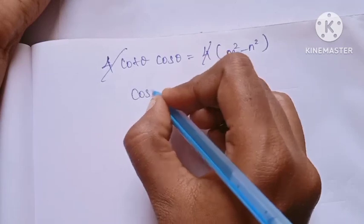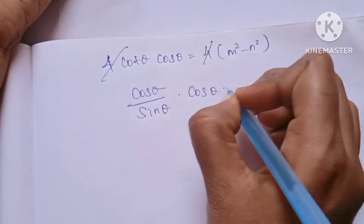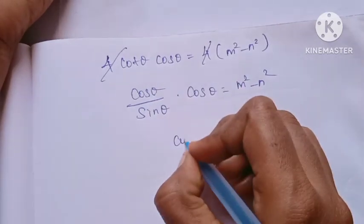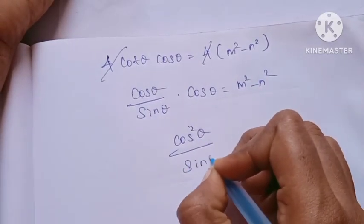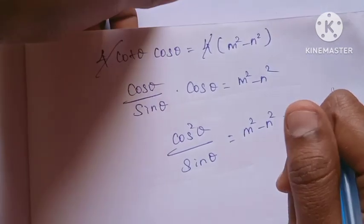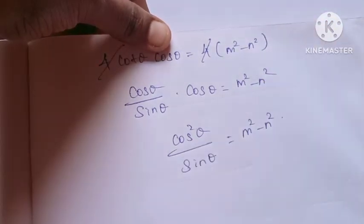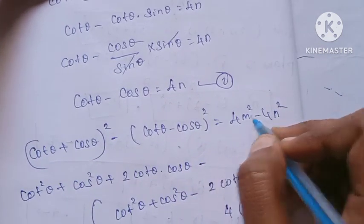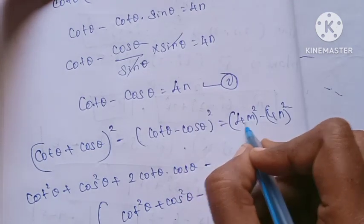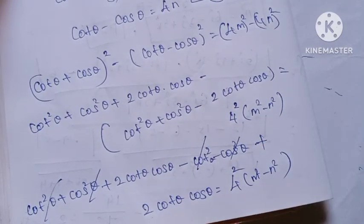So we have to use m squared minus n squared. Now cos theta into cos theta, cos squared divided by sin theta, is equal to m squared minus n squared. Note: 4 squared m is 4m whole squared, not 4m squared. So 4 squared is common here.